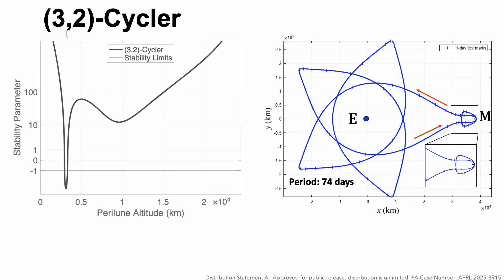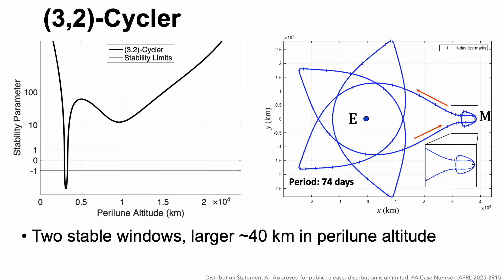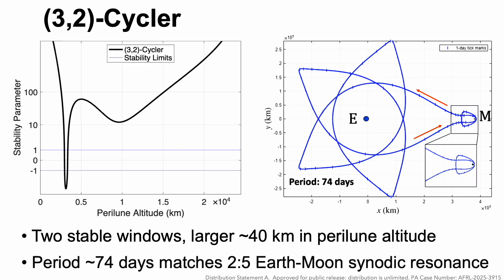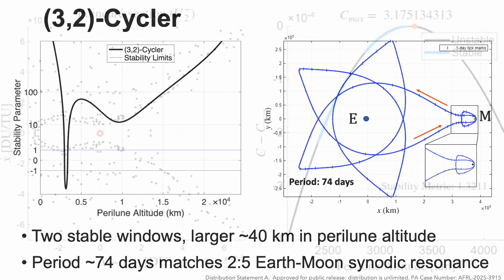The (3,2) cycler is interesting. We're plotting on the left the stability parameter as a function of the perilune altitude. That narrow window of stability parameter between negative 1 and 1 is where there is stability. In this case, we have two narrow windows. Of the two, the larger is only 40 kilometers in perilune altitude, and it has a period of about 74 days, which matches the 2-5 Earth-Moon synodic resonance, which again leads to repeatable solar geometry.